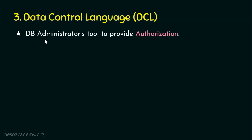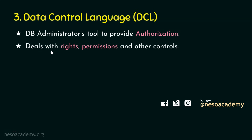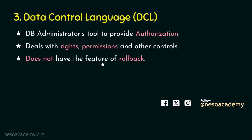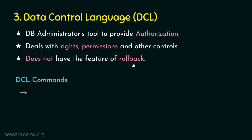Data control language is the database administrator's tool to provide authorization — defining who can access what. Though data is stored in a central location, we define who can access what. DCL deals with rights, permissions, and other controls over the database, and DCL commands do not have the feature of rollback. The two important commands in DCL are: number one, GRANT, and number two, REVOKE. As the names suggest, GRANT is used to give rights or permissions, and REVOKE is used to take them away.